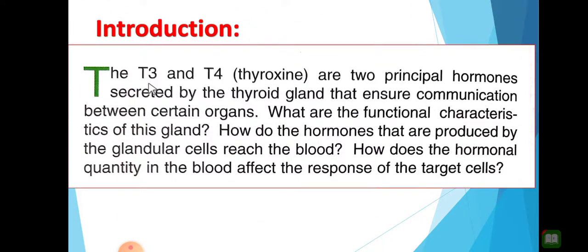Introduction: The T3 and T4 thyroxine are two principal hormones secreted by the thyroid gland that ensure communication between certain organs. We know that we have the thyroid gland — الغدة الدرقية — inside our neck. It secretes two hormones: T3 and T4, both called thyroxine. They are secreted by the thyroid gland and ensure communication with target organs via the blood.